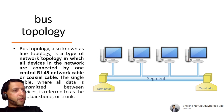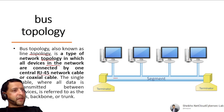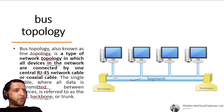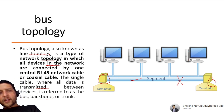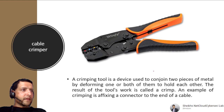Bus Topology, also known as line topology, is a type of network topology where all devices are connected by one central cable — RJ45 or coaxial. The signal cable is referred to as a bus, backbone, or trunk. All devices are connected to this cable with terminators at each end so the signal doesn't escape. A break in the cable affects the entire network.